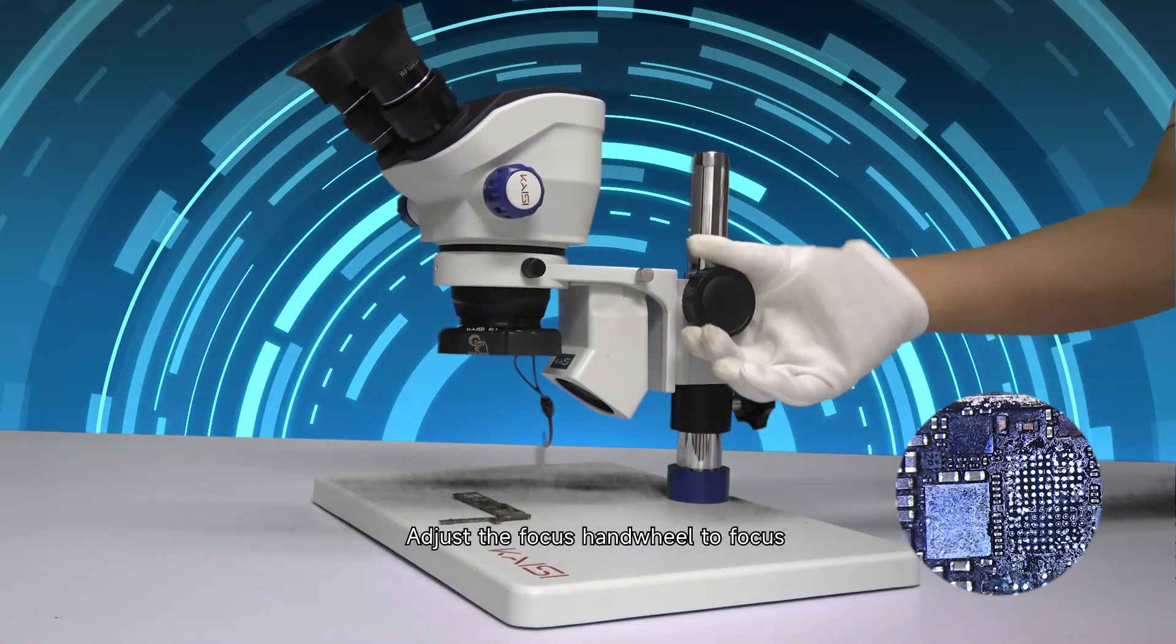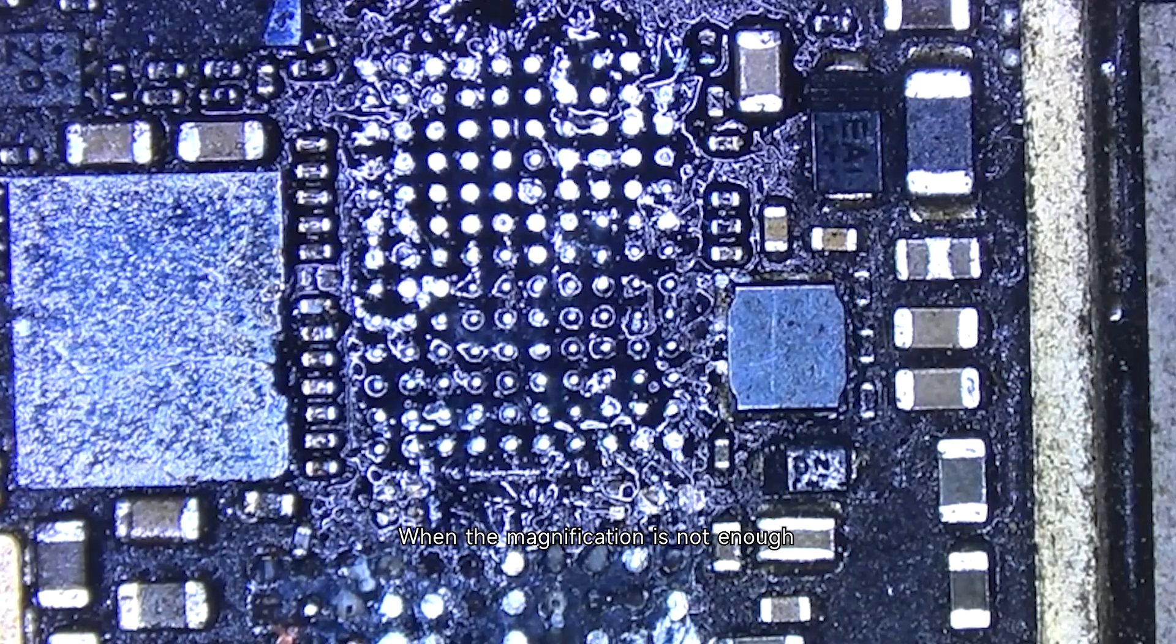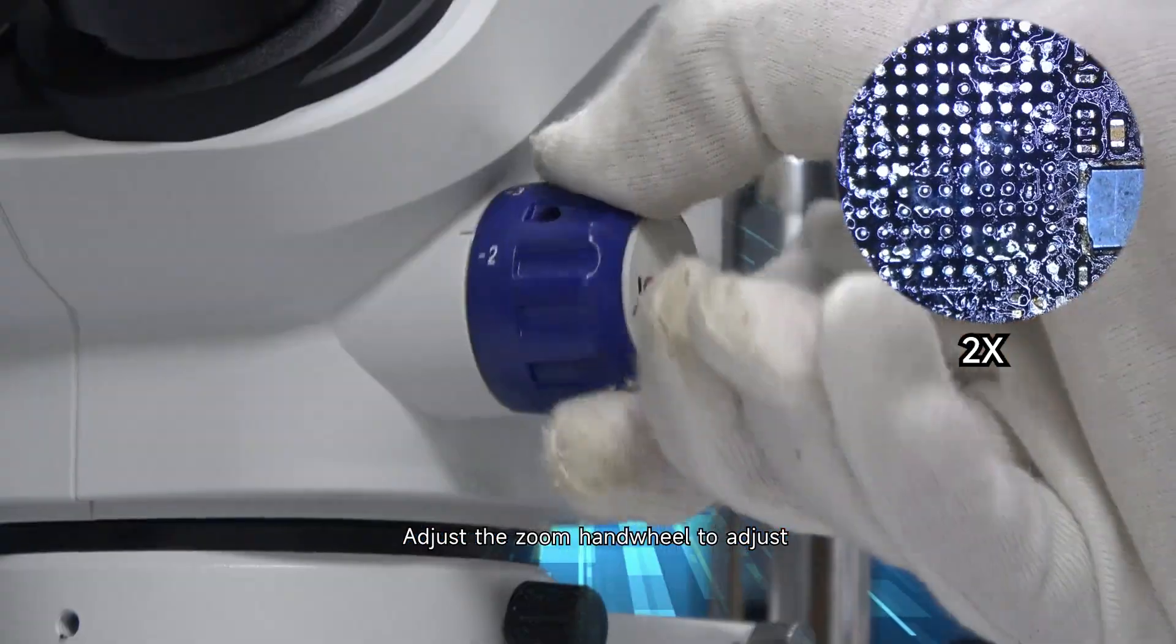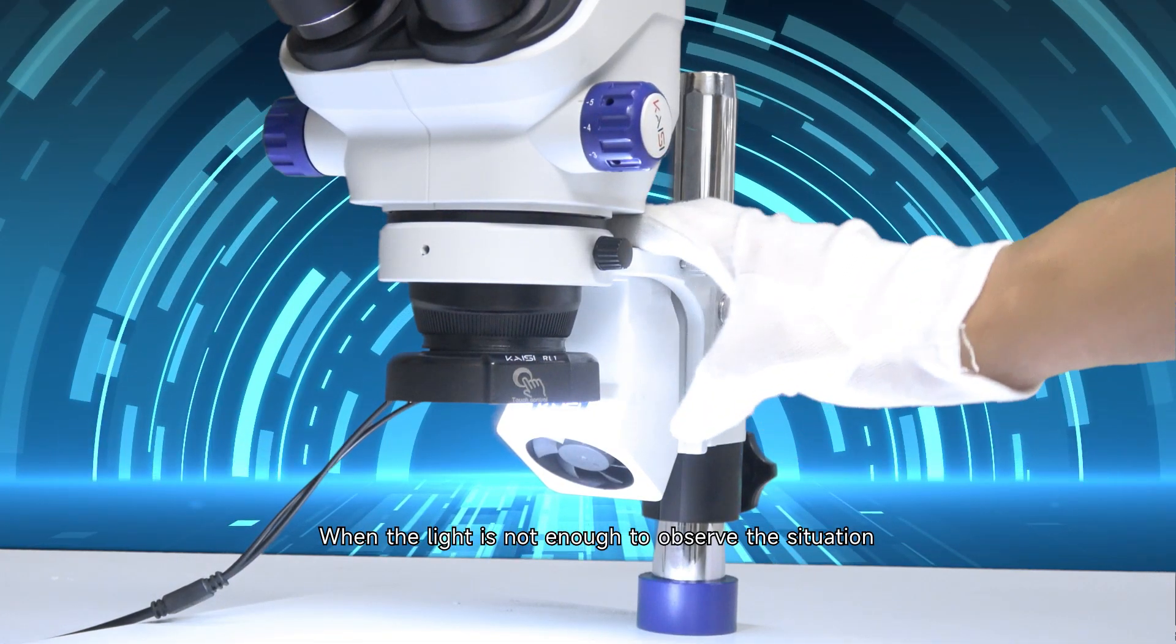When the observation image is not clear, adjust the focus hand wheel to focus. When the magnification is not enough, adjust the zoom hand wheel to adjust.